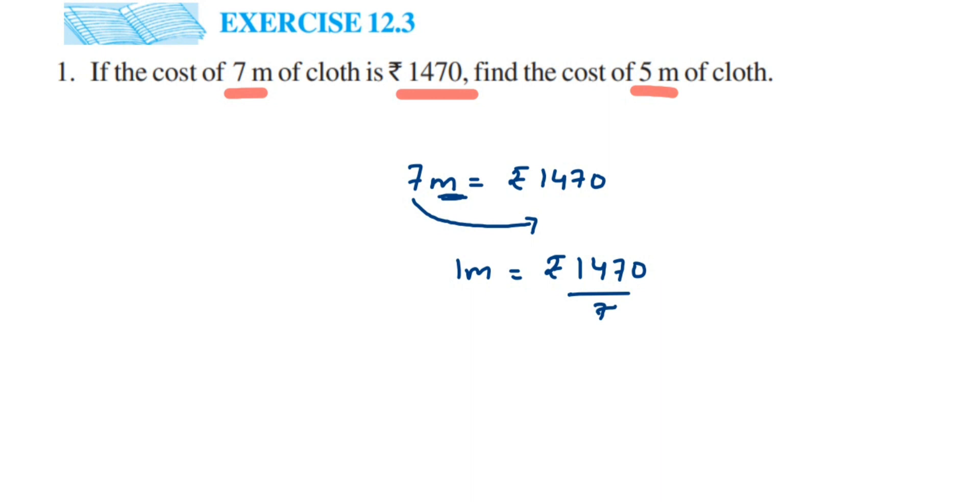This is how you can understand how to find the price of 1 meter. I hope it's clear why we're dividing. Once we divide, we get the cost of 1 meter, and then we can find the cost of 5 meters.